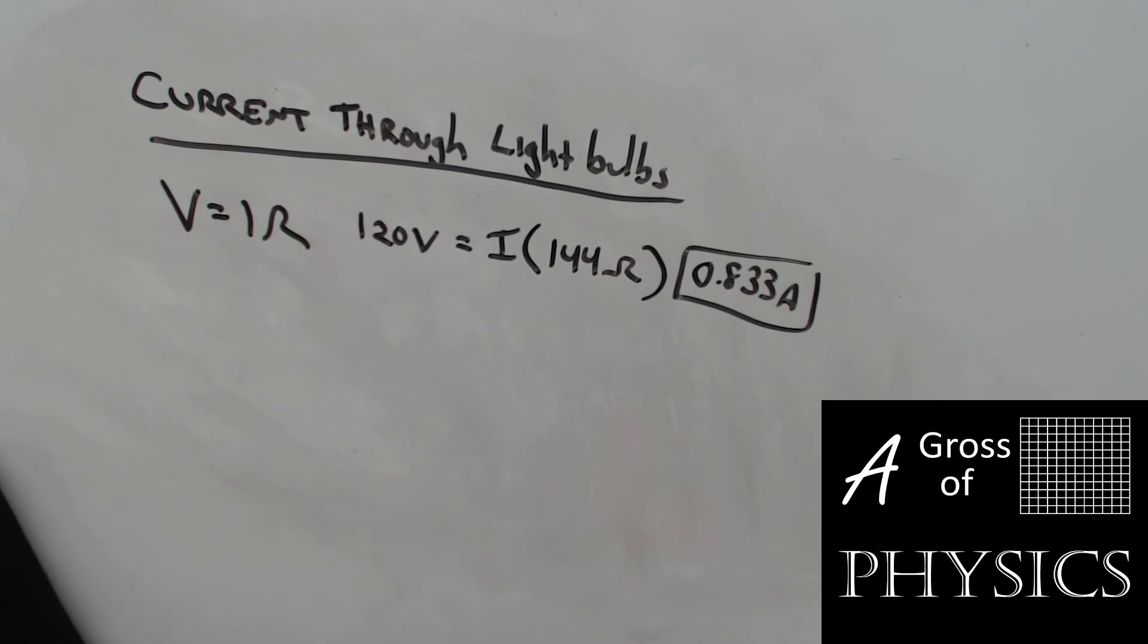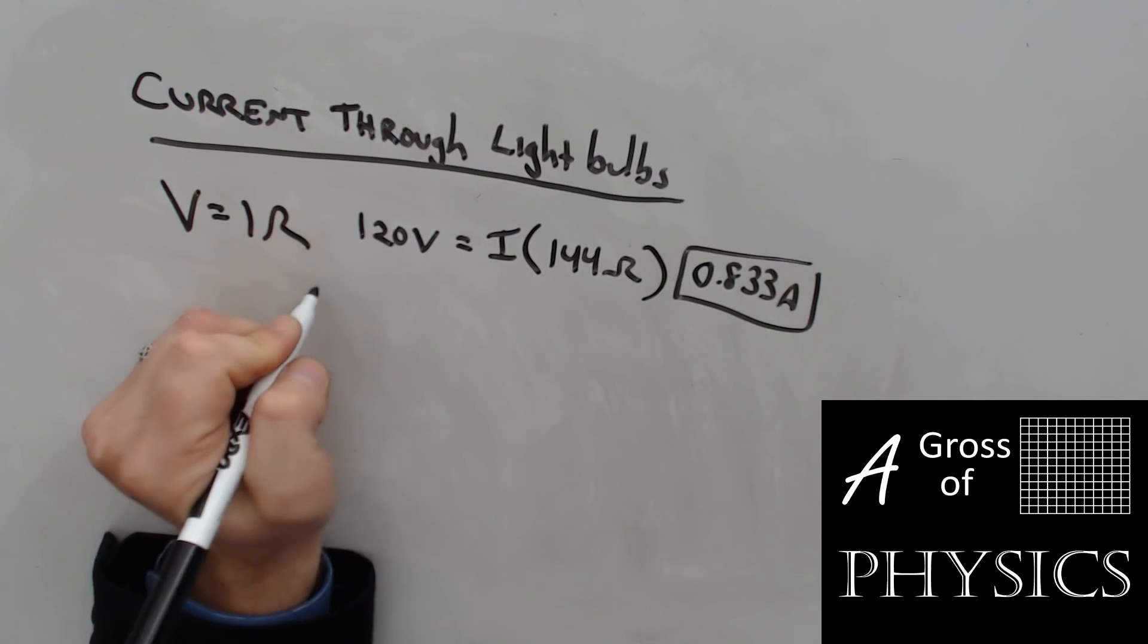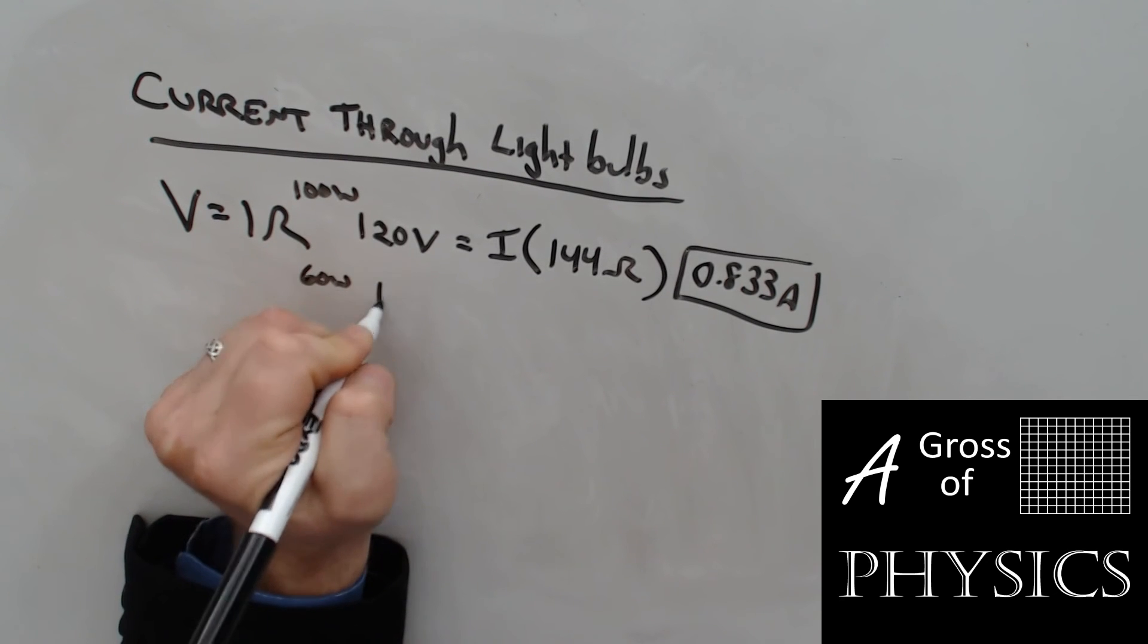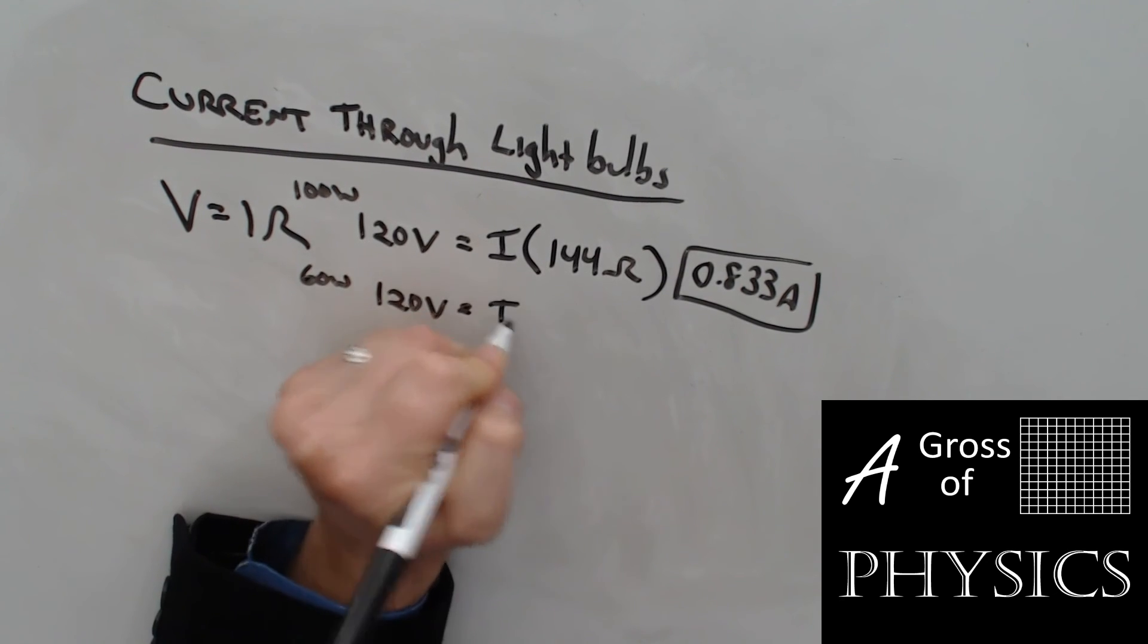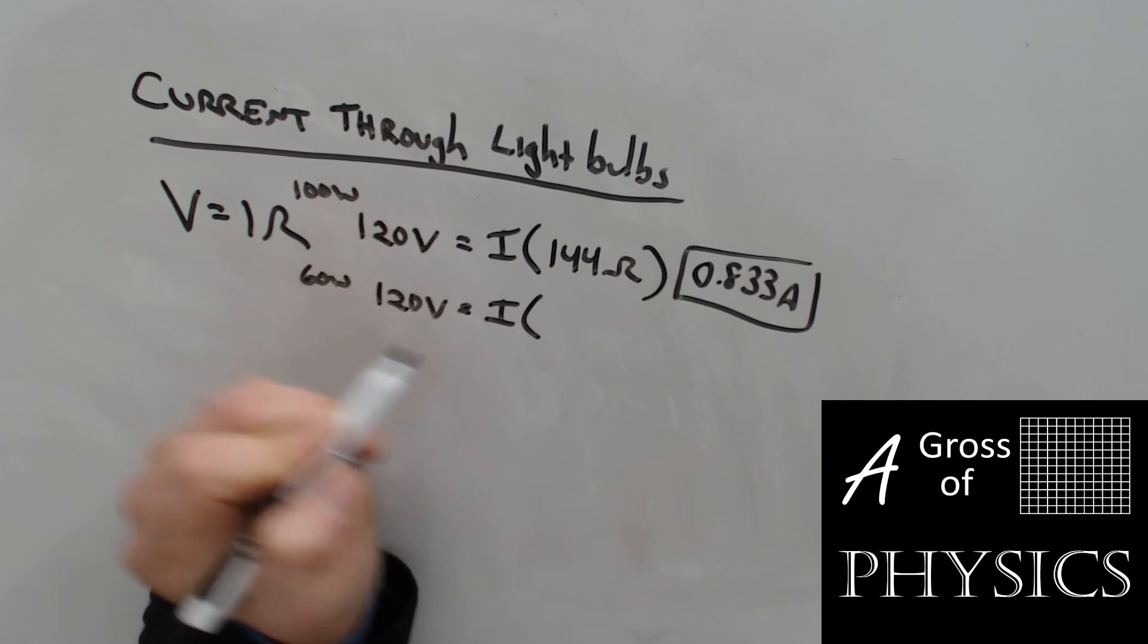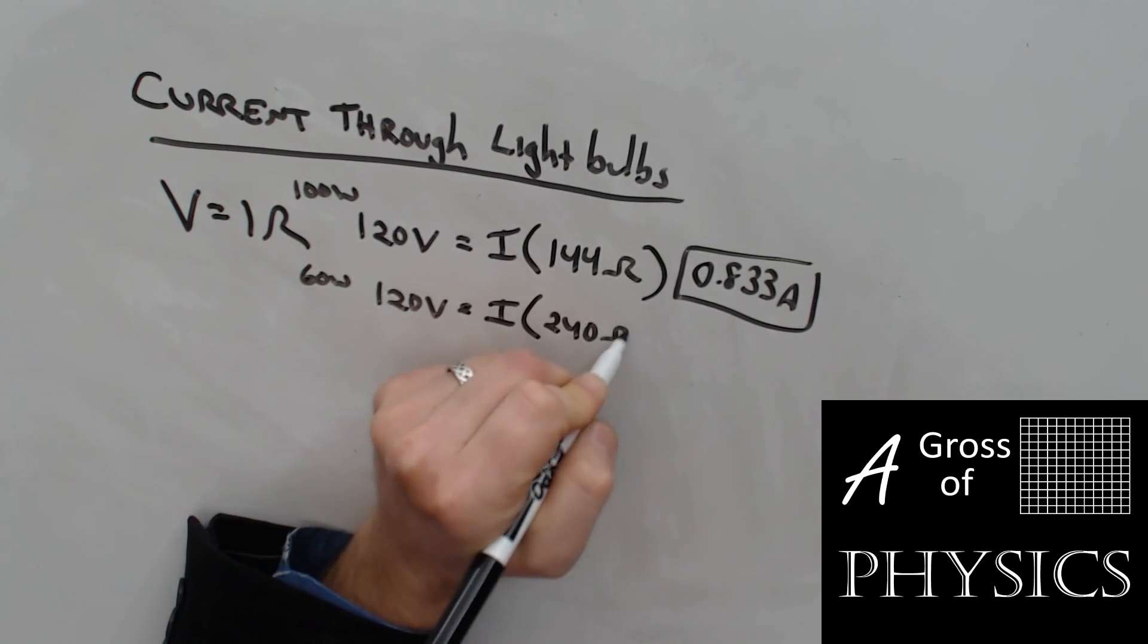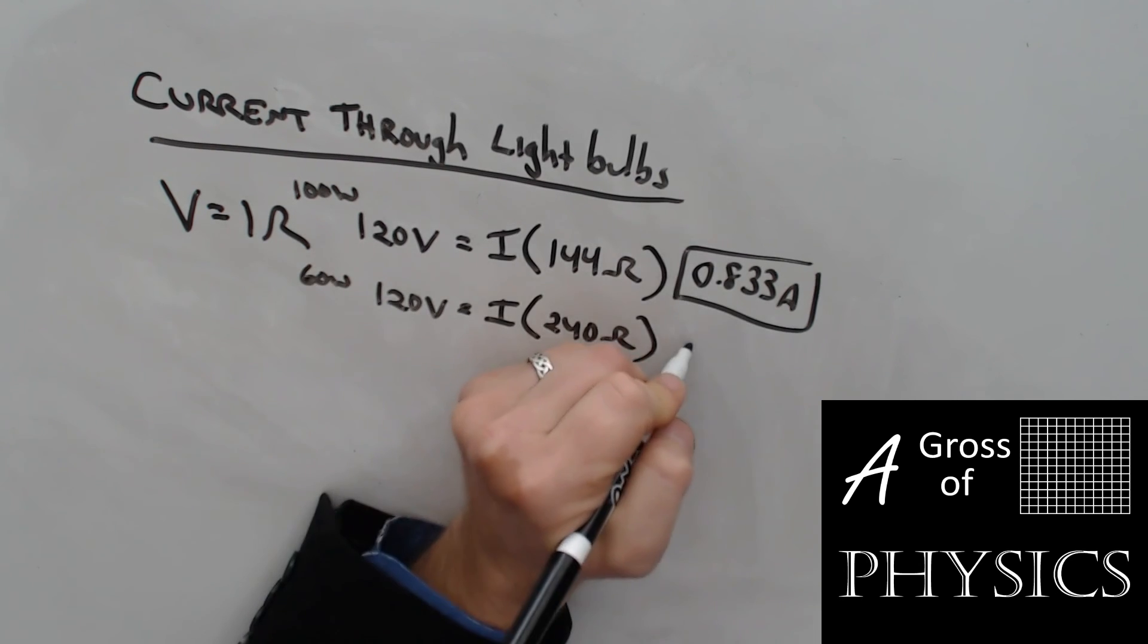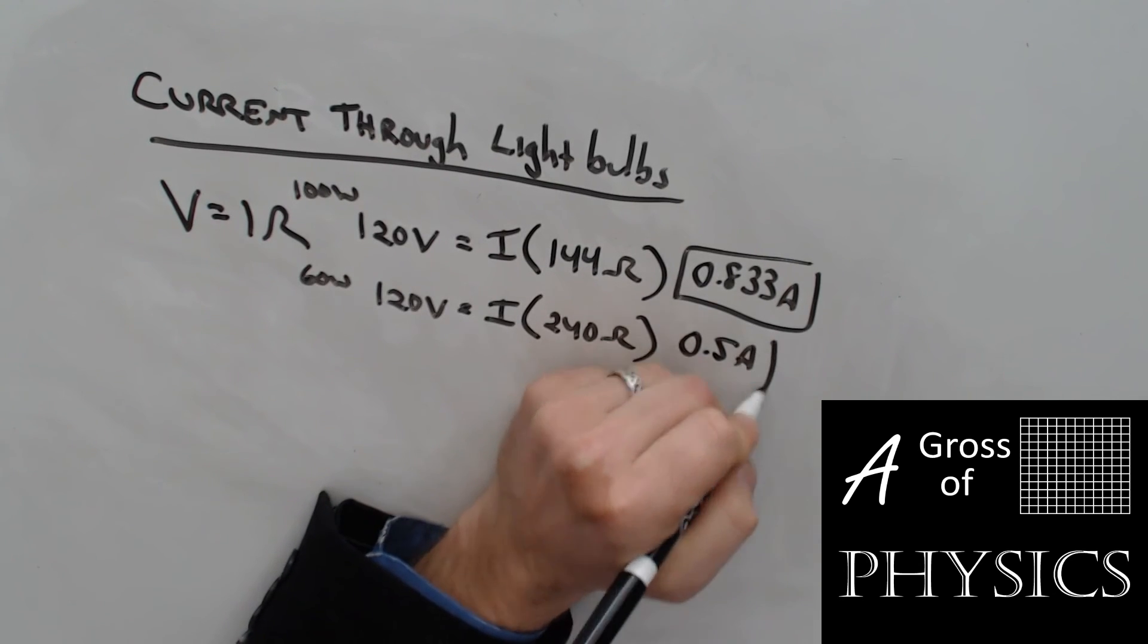We'll do two more. We'll do a 60 watt bulb. 120 volts equals I, and a 60 watt bulb has 240 ohms. So 120 divided by 240 gets us 0.5 amperes.